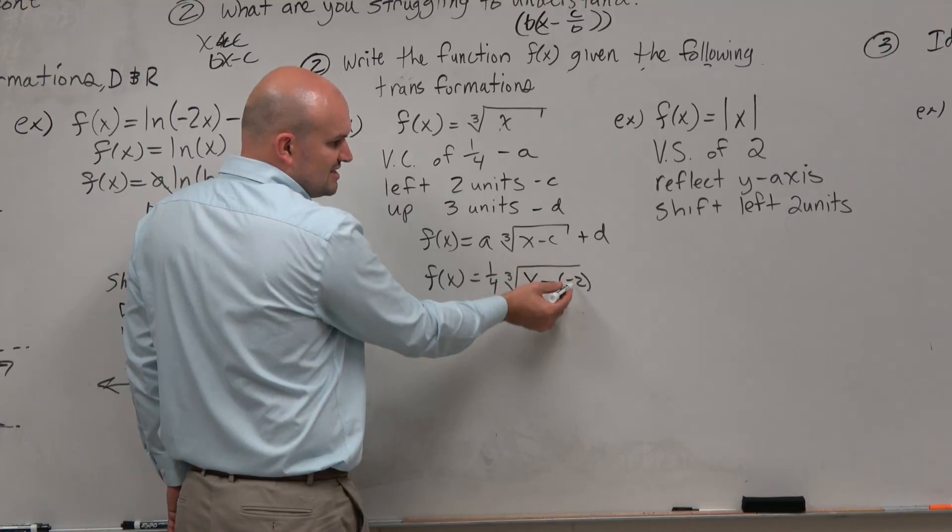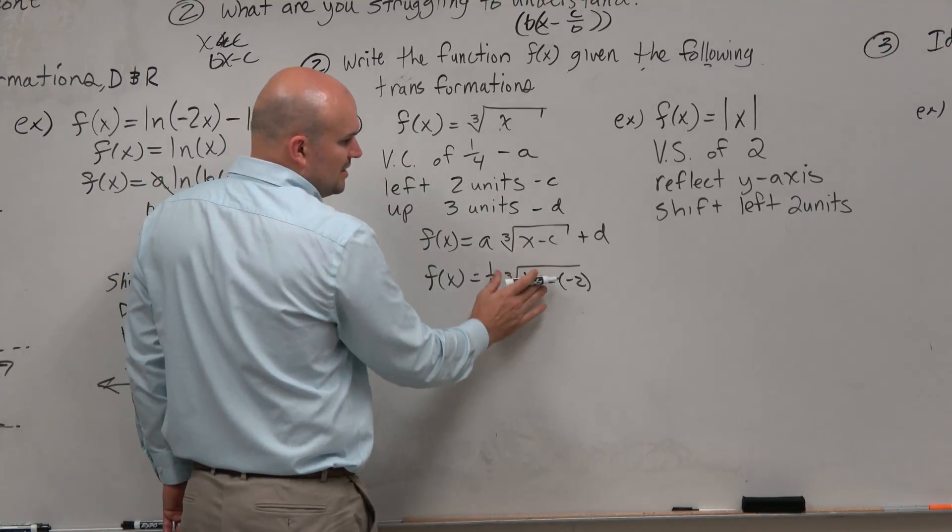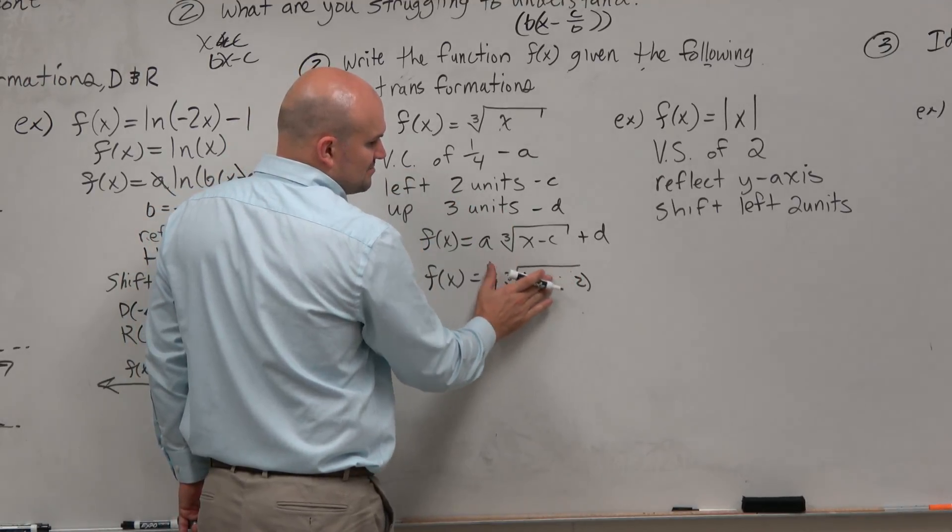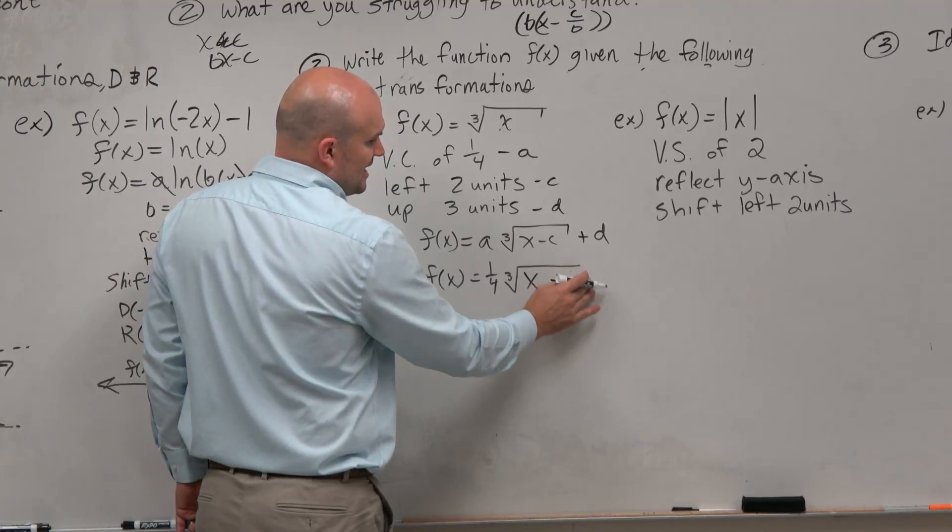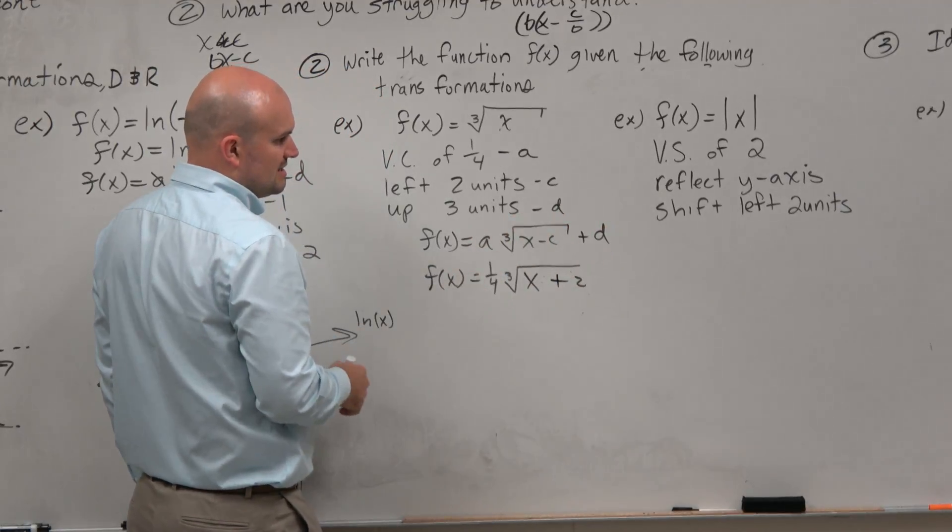But you're really, it's x minus C, where C is negative 2 because you're going to the left 2. But x minus a negative 2 is really just x plus 2. That's why it's the opposite, because that's why you see it as the opposite.